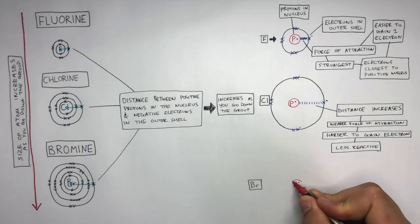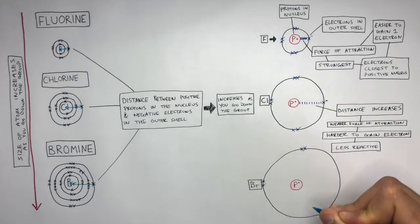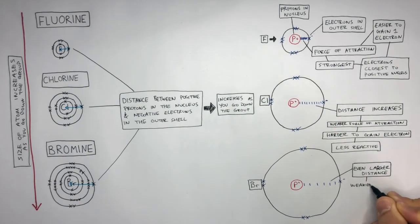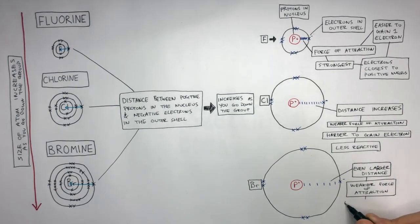Bromine is the biggest atom of the three and therefore there's an even larger distance. This gives a weaker force of attraction and compared to fluorine and chlorine, it's even harder to gain an electron. This makes it even less reactive.